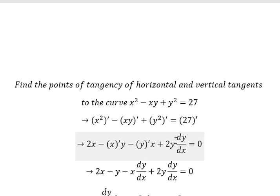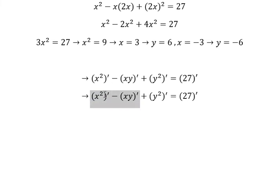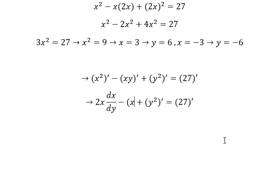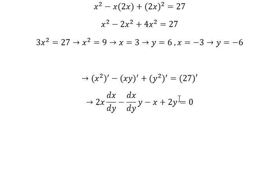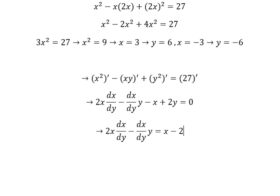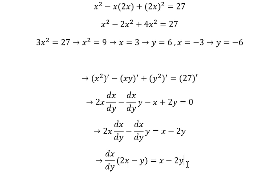Now for vertical tangents, we compute dx/dy. We have 2x times dx/dy, then the derivative of x with respect to y gives dx/dy, and the derivative of y gives 1, then 2y. This equals zero. Moving terms to the right, we get x minus 2y, and we factor similarly.